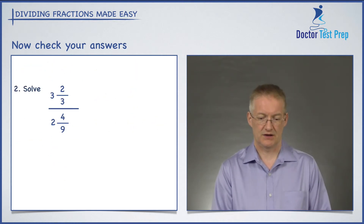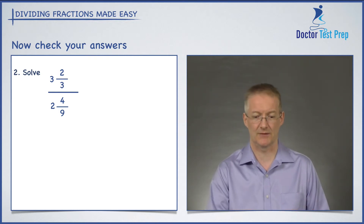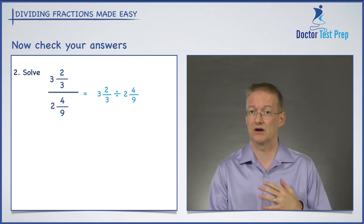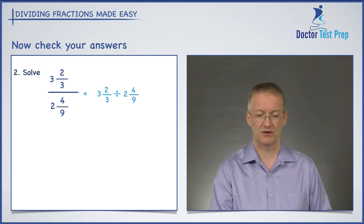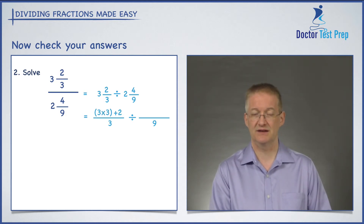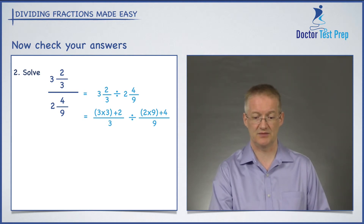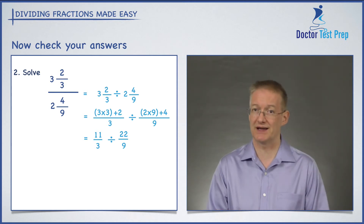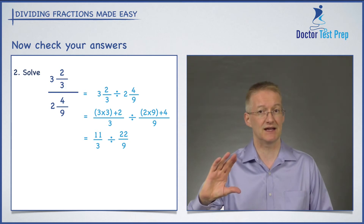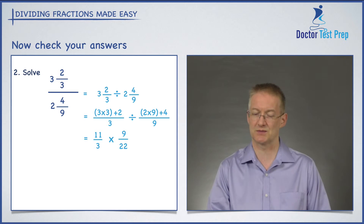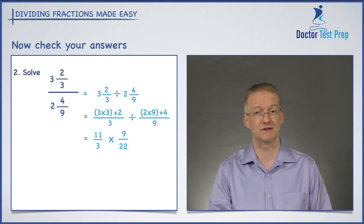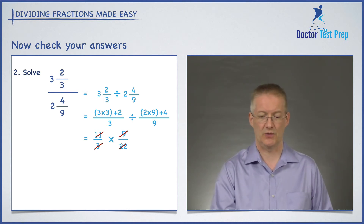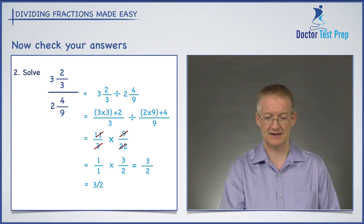Let's have a look at number two: 3 and 2 thirds divided by 2 and 4 ninths. We've got mixed numbers here, so we need to convert them into improper fractions before we begin. So: 3 times 3 plus 2 over 3, divided by 2 times 9 plus 4 over 9 — that gives me 11 over 3 divided by 22 over 9. Now step two: take that last fraction, flip it upside down, and convert the divide sign into a multiply. So I have 11 over 3 times by 9 over 22. The 3 and 9 cancel, and the 11 and 22 cancel, leaving me with 1 over 1 times by 3 over 2. My final answer is 3 over 2.